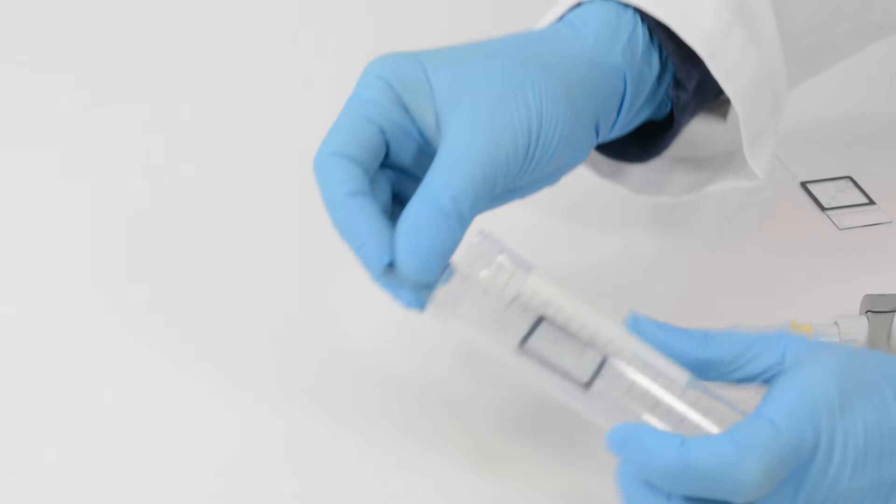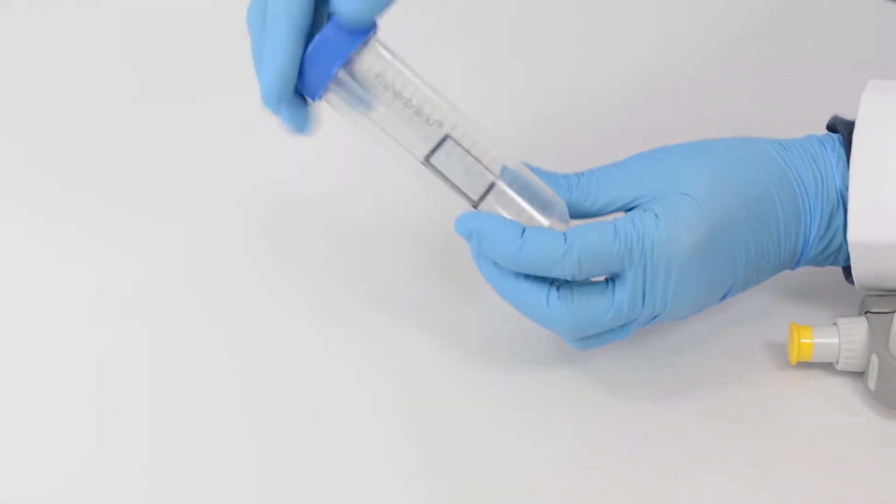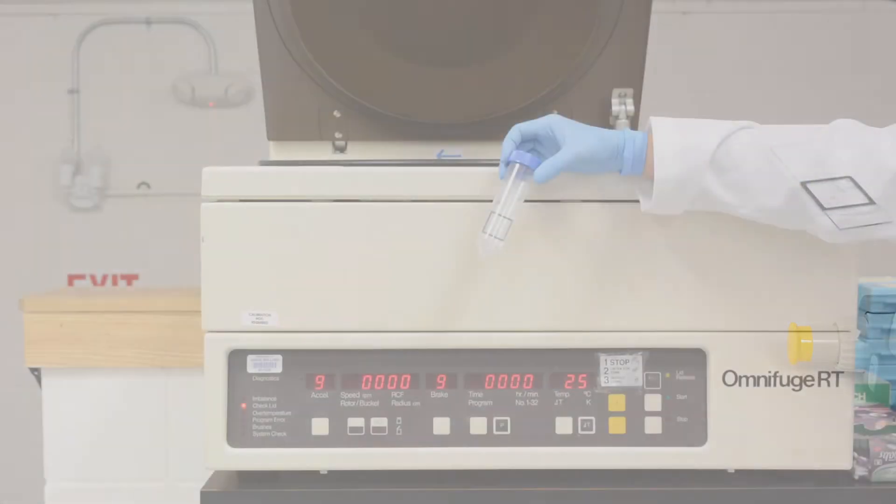Reagent removal can also be performed by inserting a slide into a 50 milliliter conical tube and centrifuging at 1000 RPM.